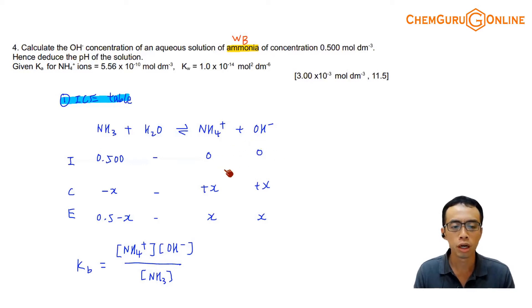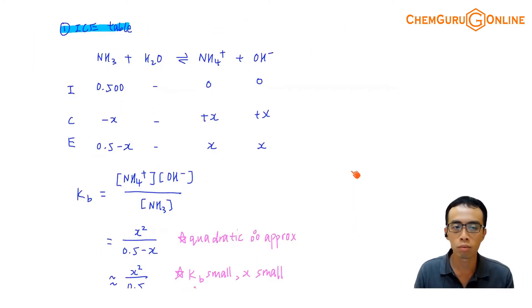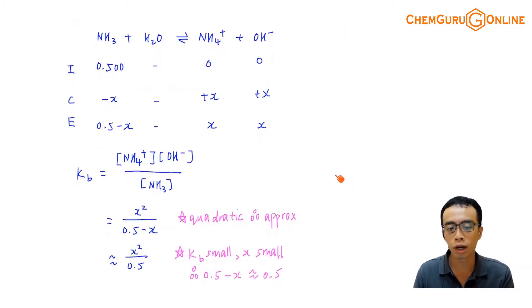NH4+ and OH-: original 0, 0; change minus x, plus x, plus x; equilibrium 0.5-x, x, x. You can do the approximation here, 0.5-x is roughly equals to 0.5. If you don't want to do the approximation, we can wait until we encounter a quadratic equation, then it becomes a trigger for approximation.